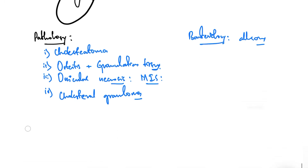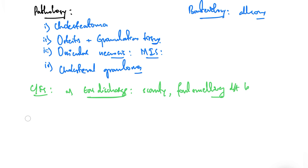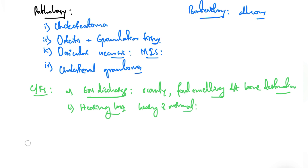The bacteriology is the same as the Tubotympanic type. For clinical features: the ear discharge is scanty but very foul-smelling due to bone destruction. Hearing is normally preserved since the pars tensa is intact, and if the ossicular chain is intact hearing is fine. However, when cholesteatoma is present it may bridge the gap of destroyed ossicles, maintaining some hearing.